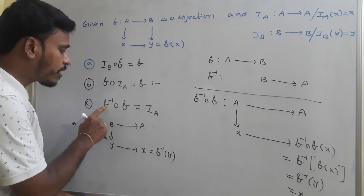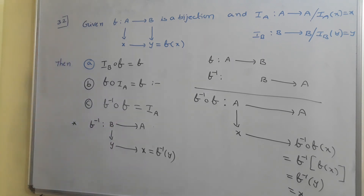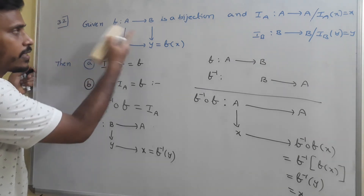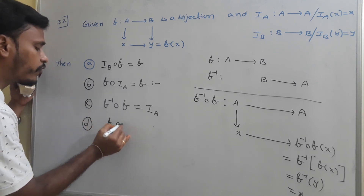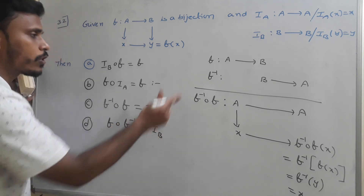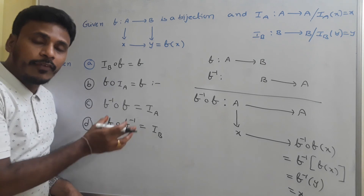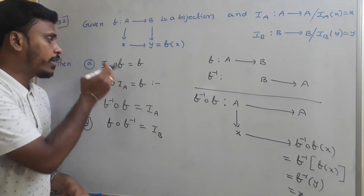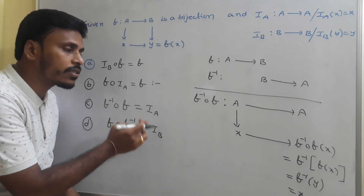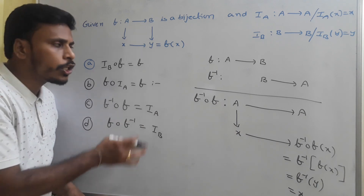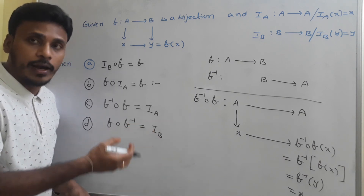Therefore, f⁻¹ ∘ f equals iA. In the same way, if you think about f ∘ f⁻¹, then it will become iB. So f ∘ f⁻¹ = iB. The proof is very similar to the one for f⁻¹ ∘ f = iA. At the end, we need to remember all these laws related to functions and identity functions: iB ∘ f = f; f ∘ iA = f; f⁻¹ ∘ f = iA; f ∘ f⁻¹ = iB. No need to memorize — whenever the situation comes, just analyze it. With the analysis, you will easily answer all these types of questions.